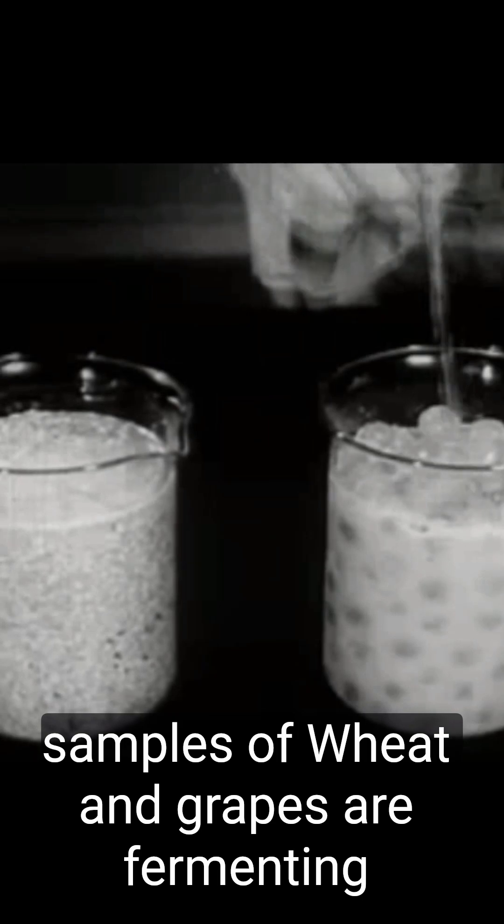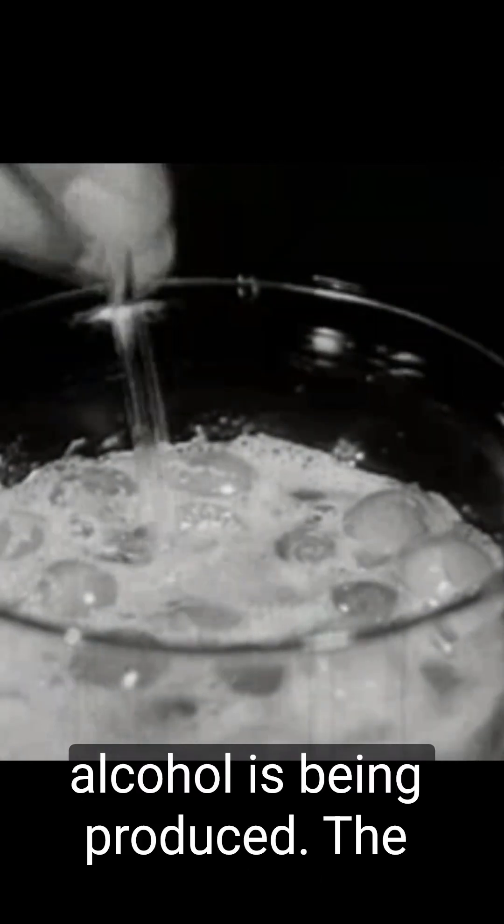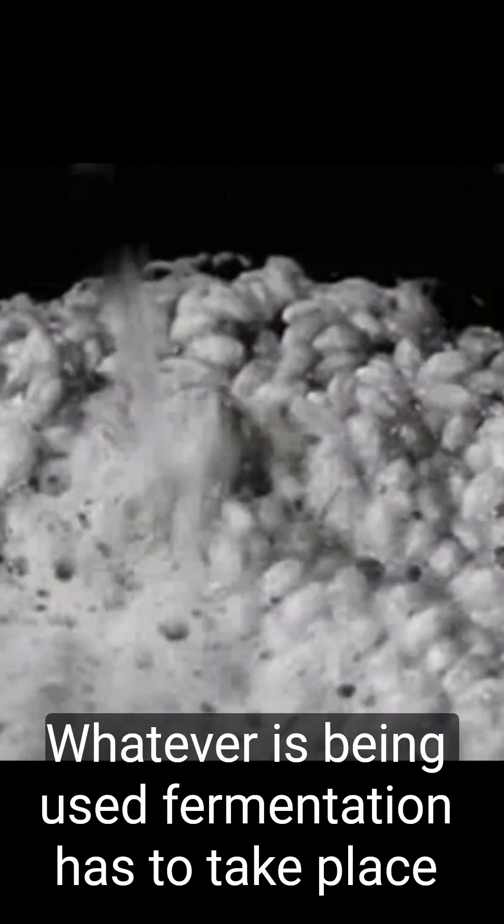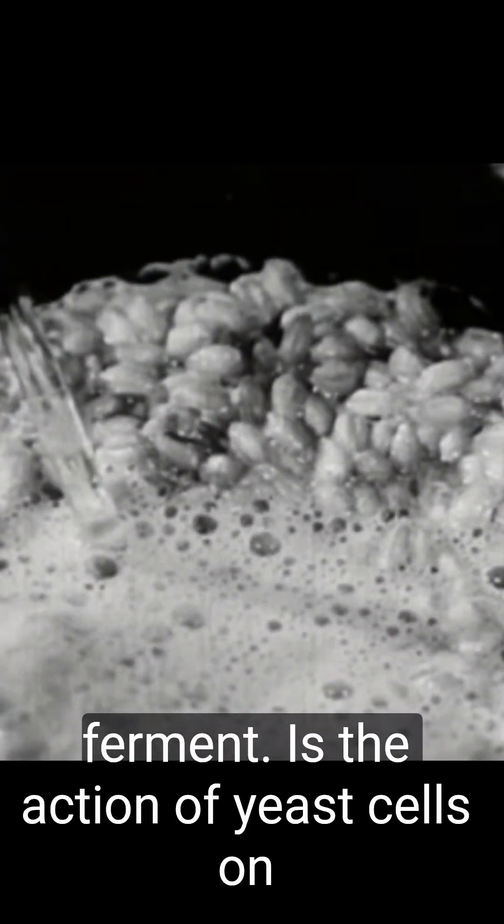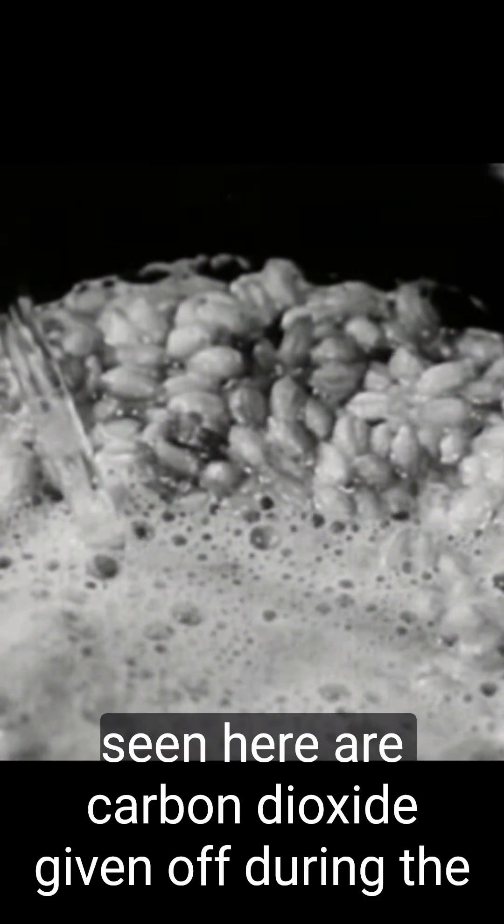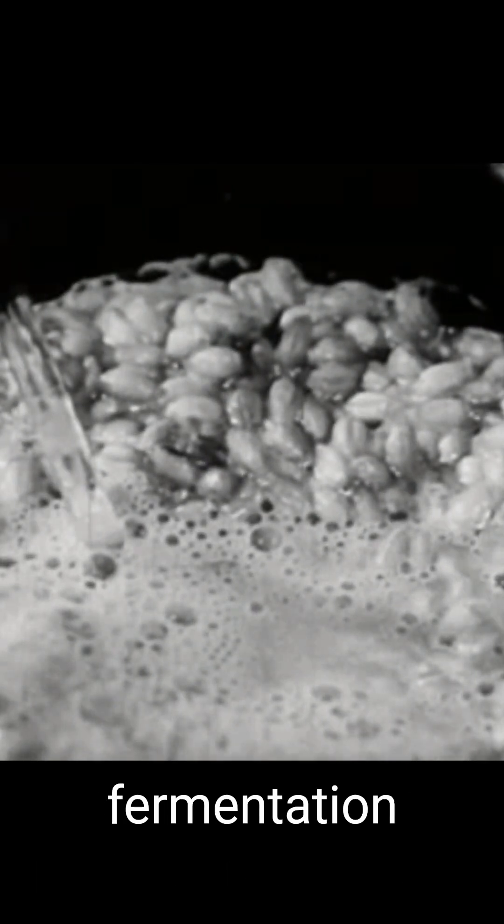As these apples, wheat, and grapes are fermenting, alcohol is being produced. These raw materials usually need to be prepared for fermentation - cracking and crushing whatever is being used. Fermentation takes place through the action of yeast cells on sugars to produce alcohol. The bubbles here are carbon dioxide given off during the fermentation process.